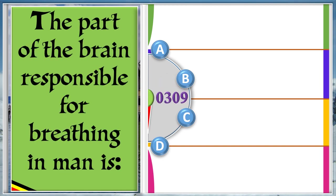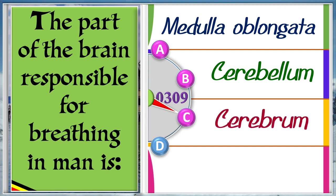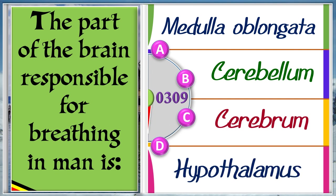The part of the brain responsible for breathing in man is A: Medulla oblongata. B: Cerebrum. C: Cerebellum. D: Hypothalamus. And the answer is A, medulla oblongata.